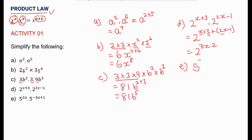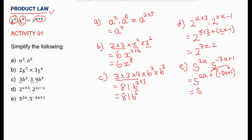Part e is 5 to the power 2a times 5 to the power negative 3a plus 1. Again, we add the exponents because the bases are the same, giving us 5 to the power 2a plus negative 3a plus 1. So 2a minus 3a is negative a, meaning the answer is 5 to the power negative a plus 1. We've simplified our exponential expressions.